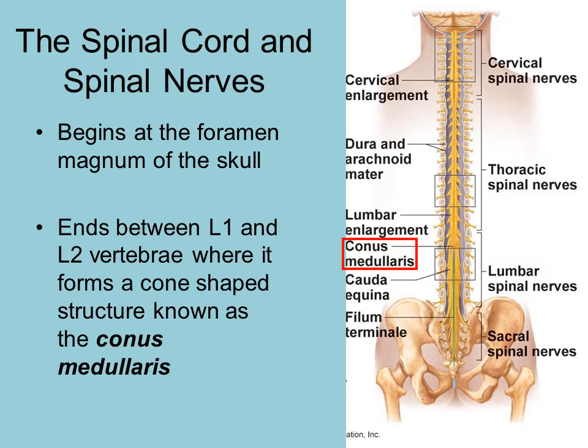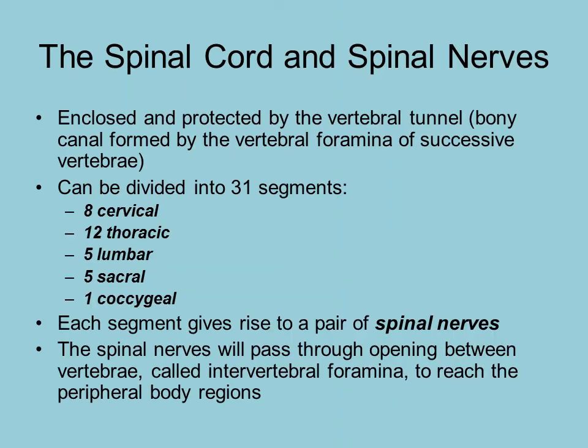The spinal cord begins at the foramen magnum, which is how it passes through the skull and attaches to the brain stem. The spinal cord extends down to approximately the L1–L2 vertebrae, where it ends in a cone-shaped structure called the conus medullaris. Nerve fibers do extend below this point, but the spinal cord itself ends between L1 and L2, which is why a spinal tap is performed around L3 so as not to hit the spinal cord.